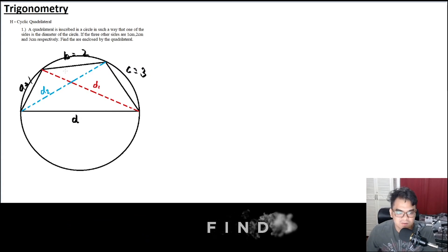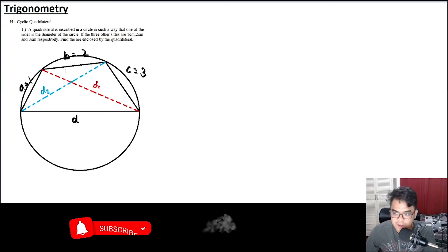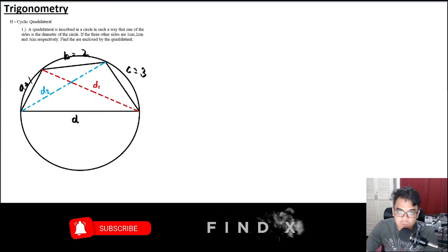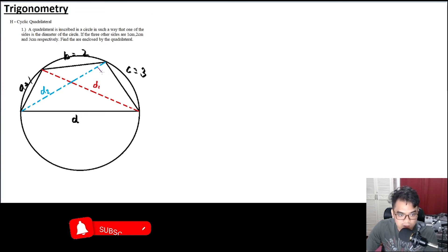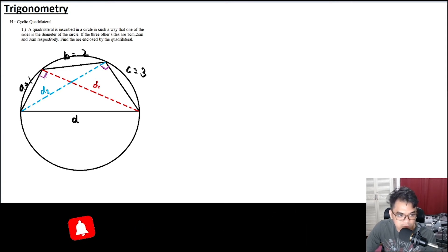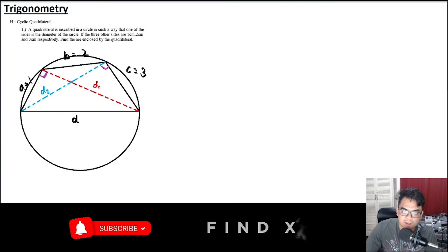Remember: when dealing with a cyclic quadrilateral where one of the sides is the diameter of the circle, the angles at the vertices opposite the diameter will always be 90 degrees. So this angle is 90° and this one as well.